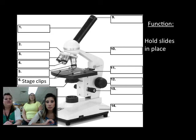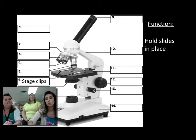These are stage clips, number six. That's where you put the microscope slide underneath. Its job is to hold the slide in place so it's not sliding around or dropping on the table.